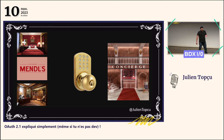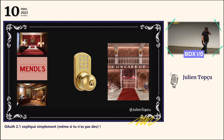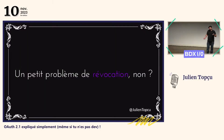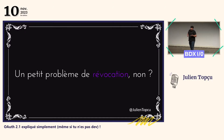Ce qui se passe, c'est que des fois on a des anciens convives qui se promènent en ville et qui se rappellent qu'ils avaient reçu un code pour accéder à leur chambre, et qui se disent : « Tiens, je vais essayer si ce code marche. » Et c'est comme ça qu'ils arrivent à accéder aux chambres et à squatter. On a ce qu'on appelle un problème de révocation : une fois qu'on a donné l'accès à un convive, on n'a aucun moyen de lui enlever.